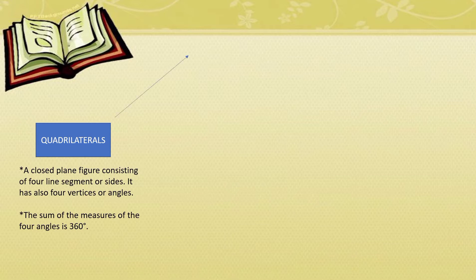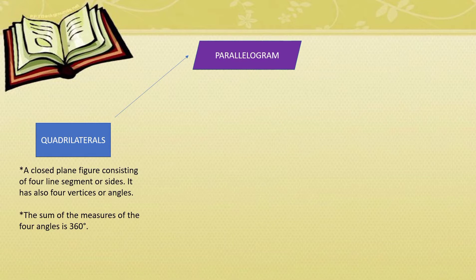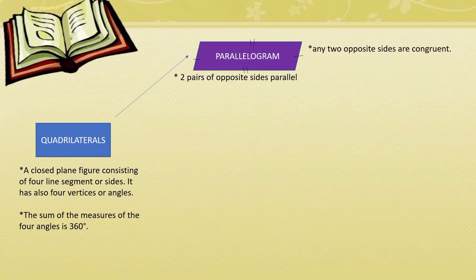Let us recall the definition of the following quadrilaterals. We have parallelogram. Do you still remember the definition of a parallelogram? It has two pairs of opposite sides that are parallel. We will recall the properties of a parallelogram. First, any two opposite sides are congruent, as indicated in the figure.